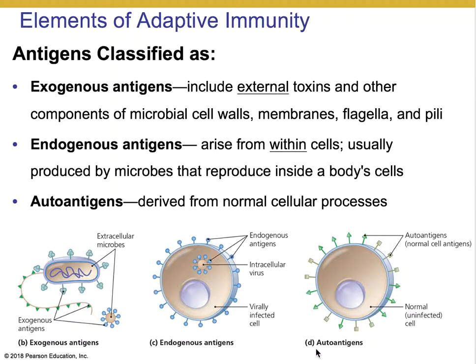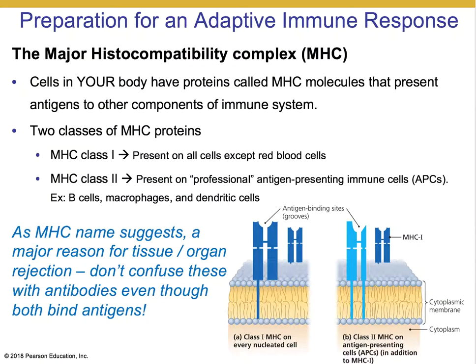Another important example, not directly related to infection, is the concept of auto-antigens. A normal cell normally has epitopes or proteins that it displays on its surface — these are called auto-antigens because they are normal. But if the body mistakenly recognizes those as foreign, that can lead to important diseases and conditions. Those are covered in the next chapter on autoimmune diseases. We're going to focus primarily on exogenous and endogenous antigens in this lecture.